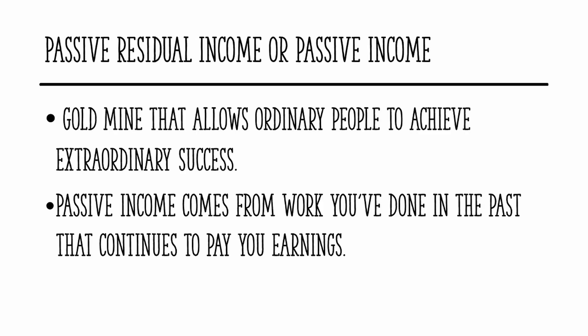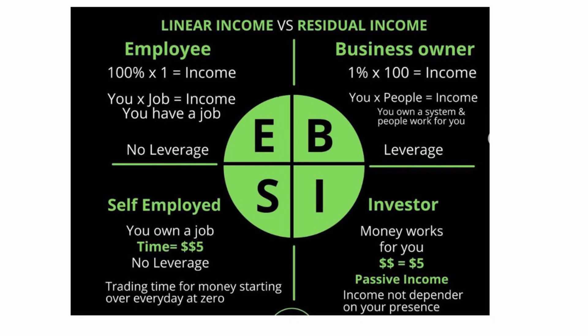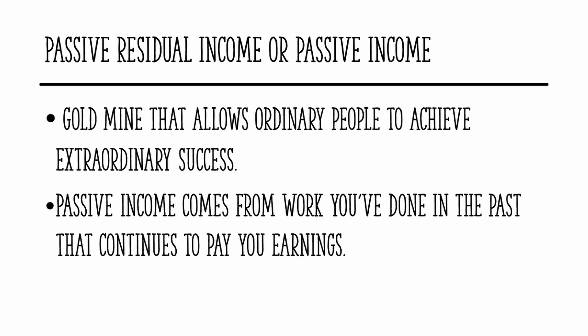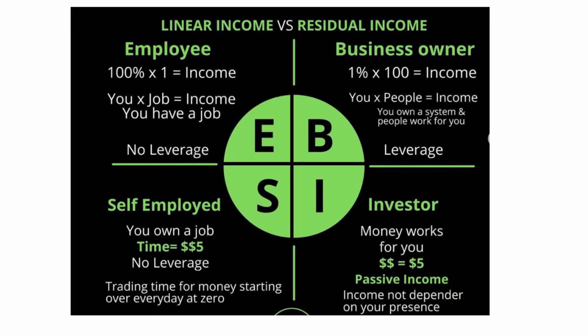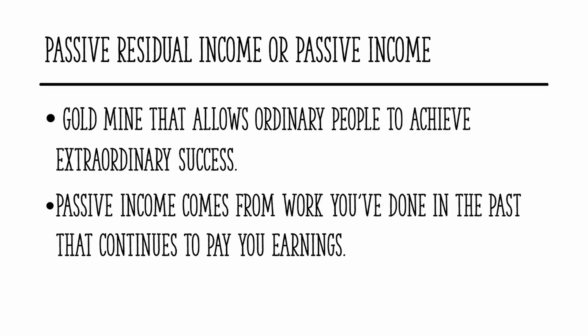What would be the most ideal income? It's the passive residual income. Passive residual income is the gold mine that allows ordinary people to achieve extraordinary successes. It comes from work you have done in the past that continues to pay you earnings. For example, if you have a YouTube channel earning $100 a month from past videos, when you stop uploading, you will have fewer visitors and less income — it's still passive, but it won't be as much. It's definitely better than linear or leverage income.